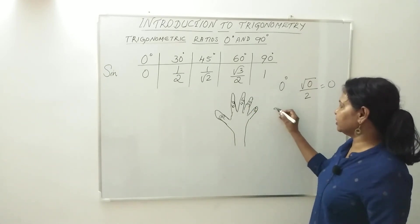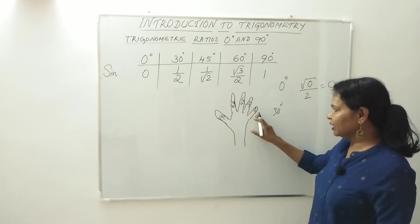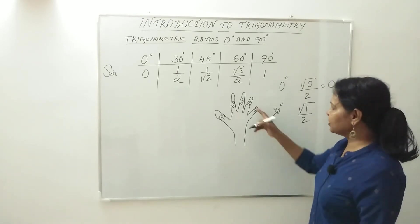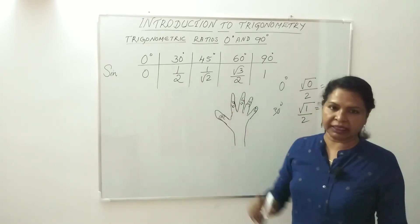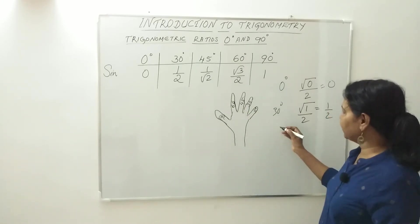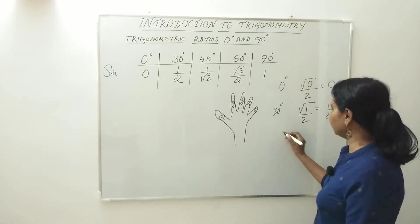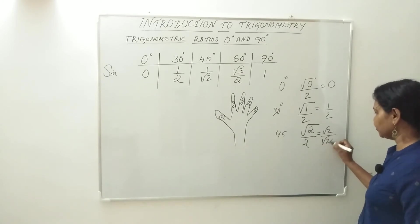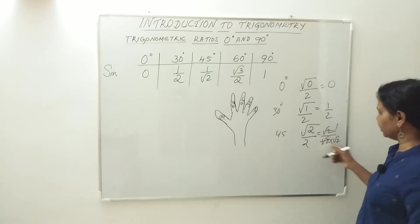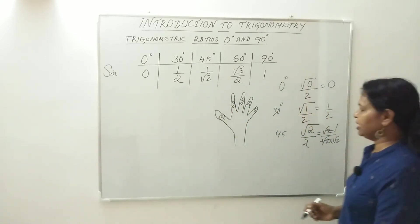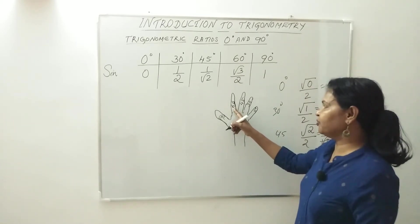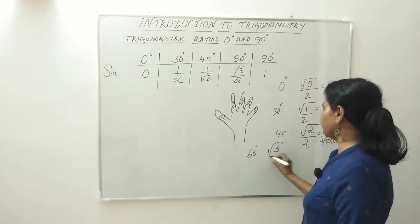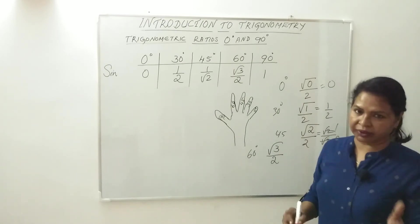Now I will go to 30 degrees. I take this finger for 30 degree — the remaining finger is 1. So the square root of 1 divided by 2: square root of 1 is 1, so that is 1 by 2. That is correct for sine 30. For 45 degrees, the remaining fingers are 2, so square root of 2 divided by 2 — we write root 2 into root 2 in the denominator, one root 2 cancels, and we get 1 by root 2. That is correct. For 60 degrees, the remaining fingers are 3, so square root of 3 divided by 2 — that is root 3 by 2. That is also correct.